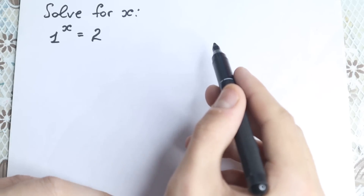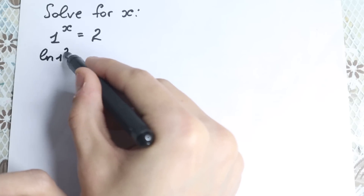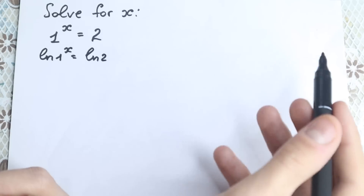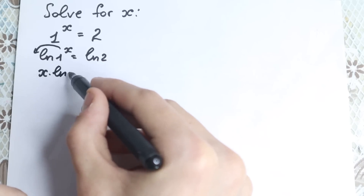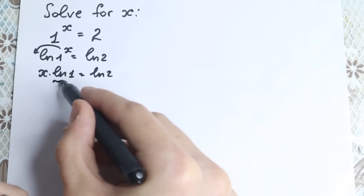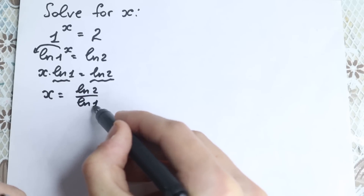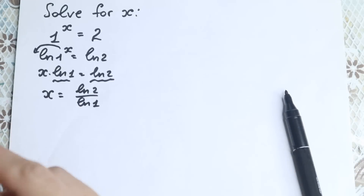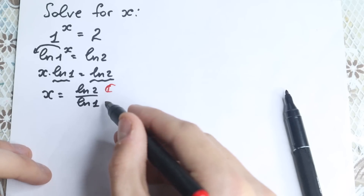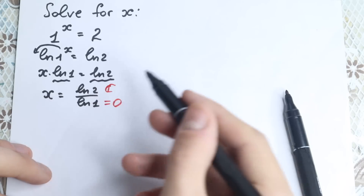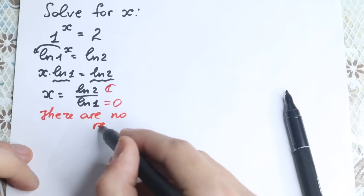First, let's prove that there is no real solution. Let's take the natural log on both sides: natural log of 1 to the x equals natural log 2. Using the log power property, x times natural log 1 equals natural log 2. Dividing both sides by natural log 1, we get x equals natural log 2 over natural log 1. But natural log 1 equals 0, and we cannot divide by 0, so there are no real solutions.